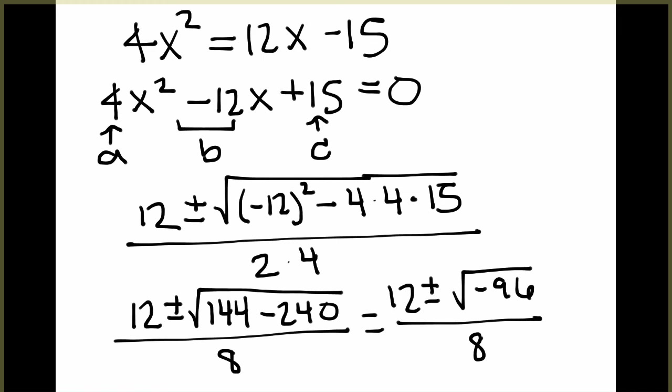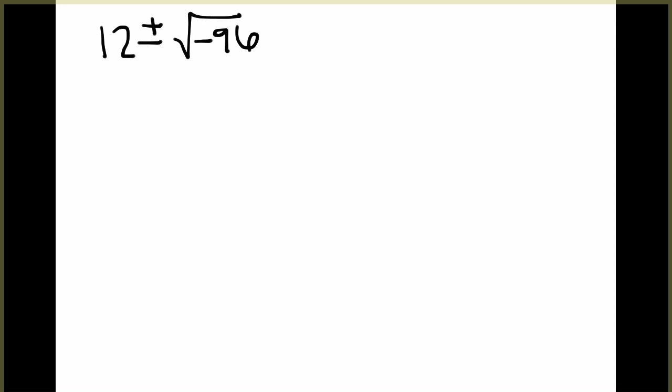Now, I'm going to go to a new slide just to continue to simplify this expression. Notice here, we're taking the square root of a negative. Anytime the part underneath the square root is negative, that's called the discriminant, we know we're going to get imaginary solutions because the square root of a negative always introduces an i.